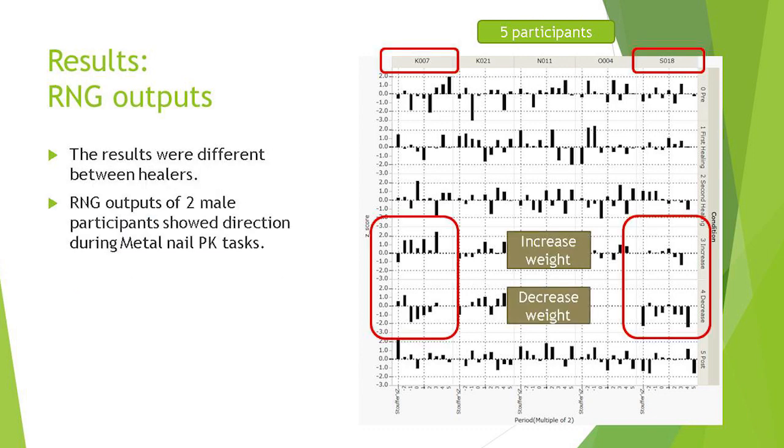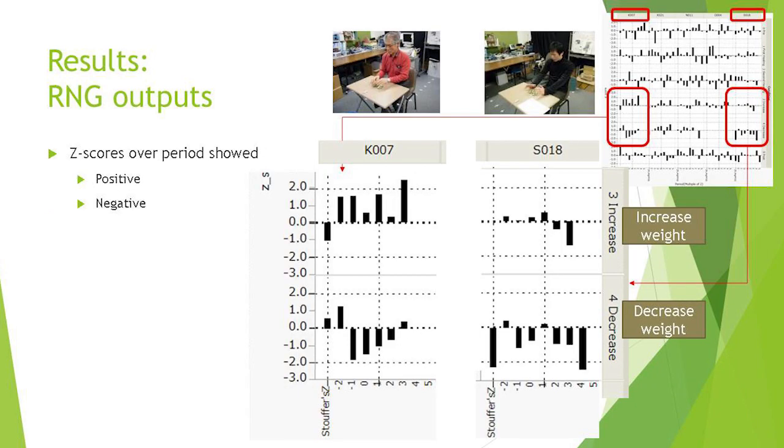So we focused on particular participants. RNG outputs of two male participants showed direction during metal nail PK tasks. Z-scores over periods showed positive and increasing weight tasks, and negative when they tried to decrease weight. So I think this is interesting but not significant.